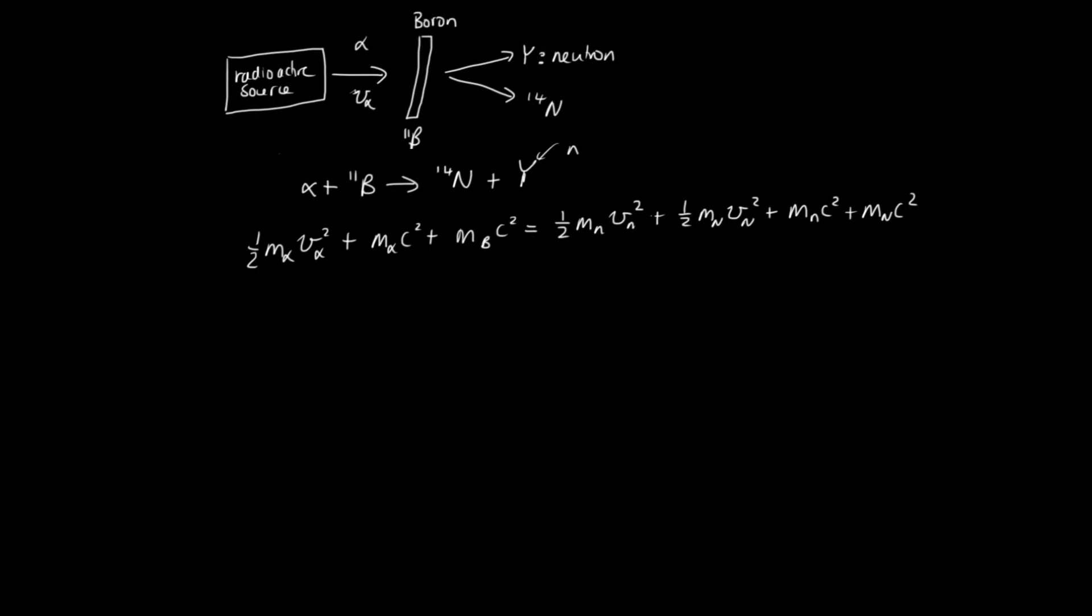Now, we also expect momentum to be conserved. Initially, all the momentum is in the alpha particle, so we've got m alpha v alpha. And then after this collision, the momentum is in the neutron plus the nitrogen.